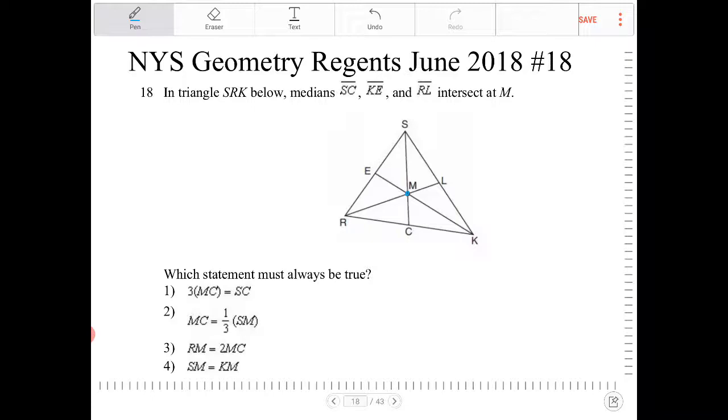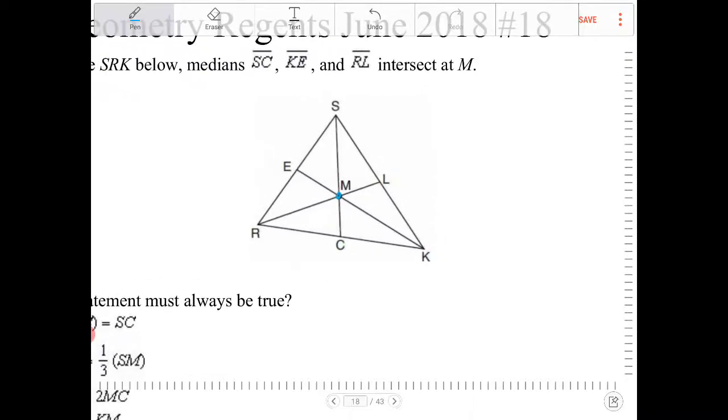Whenever you have intersecting medians, the intersection of the medians will form a point called the centroid of a triangle.